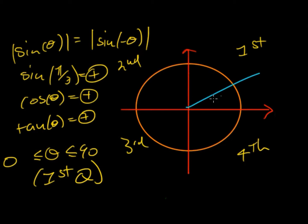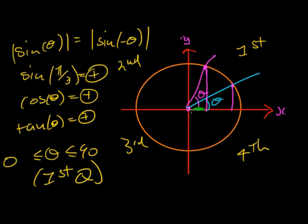If we take a line in the first quadrant and call it theta, sine is always positive there because we're looking at positive y values — you can think of this as the positive y-axis. Cos is also positive in the first quadrant because we're looking at positive x values. So in the first quadrant, when x is positive and y is positive, both sine and cos are positive.